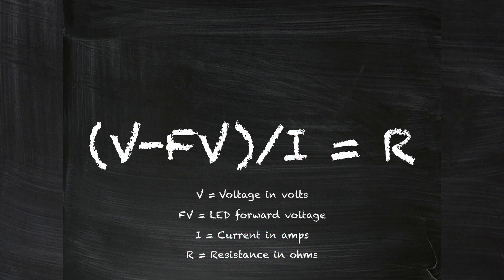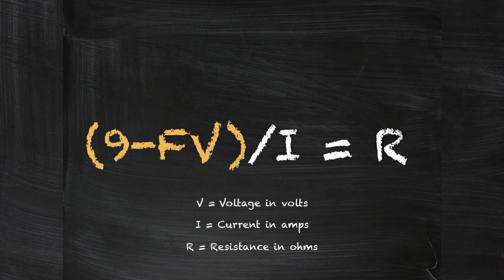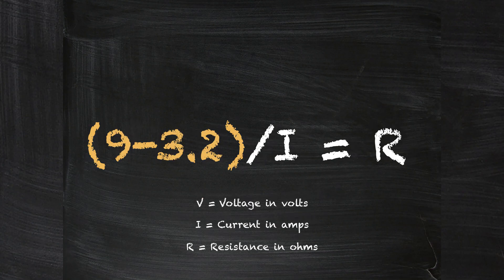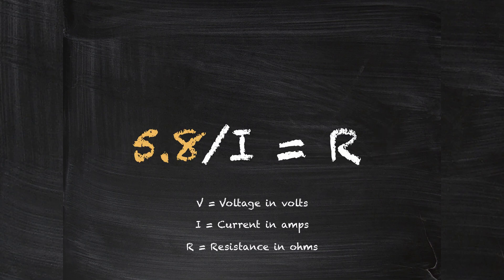So let's do an example. We have a 9 volt battery, so we have 9 minus 3.2 for a white LED, and that's going to give us 5.8.